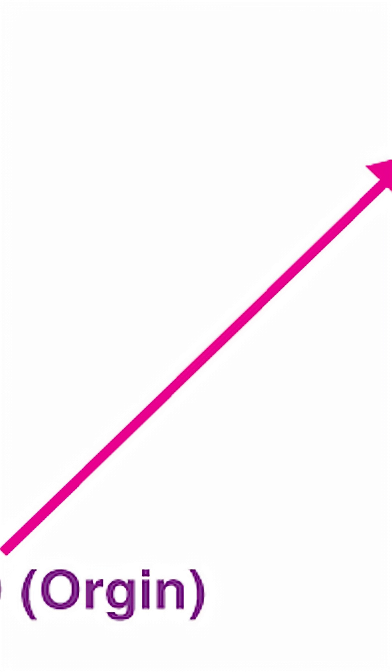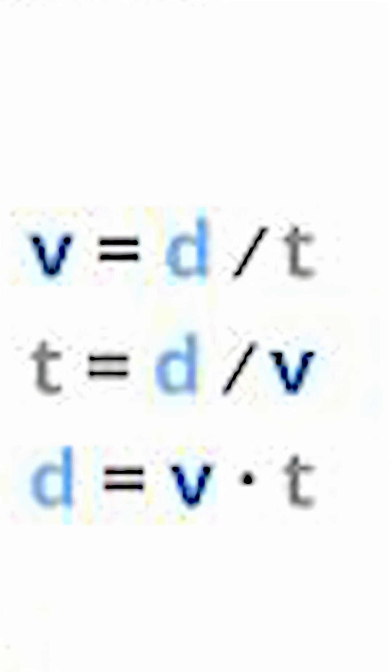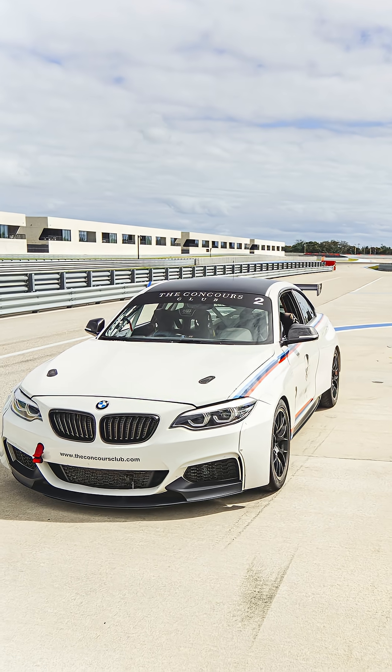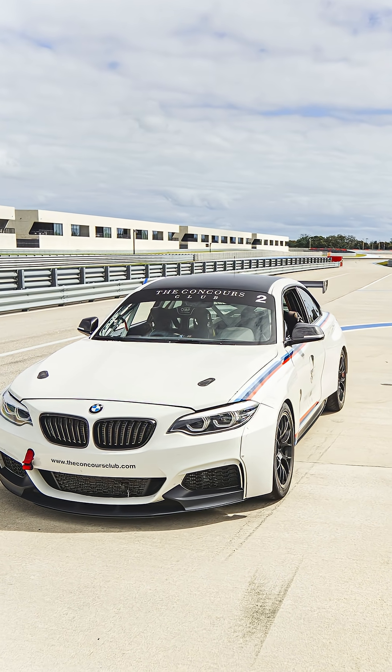Let's start with position. That's simply where an object is. If we track how position changes over time, we get velocity — the rate of change of position. Mathematically, V equals dx over dt. Velocity tells you how fast and in what direction position changes.